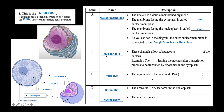B, the nuclear pore, refers to the perforations or pores on the surface of the nuclear membrane. These channels allow substances to move in or out of the nucleus — for example, mRNA leaving the nucleus after transcription to be translated by ribosomes in the cytoplasm. C, the nucleolus, is the region inside the nucleus where chromatin is most concentrated. D, the chromatin, refers to the unwound DNA scattered in the nucleoplasm. E, the nucleoplasm, is the matrix of the nucleus.